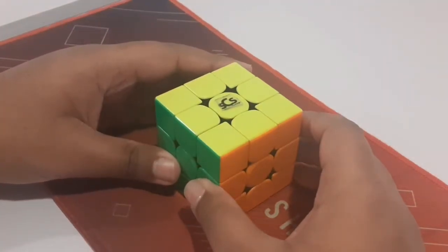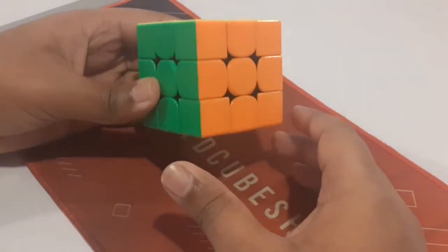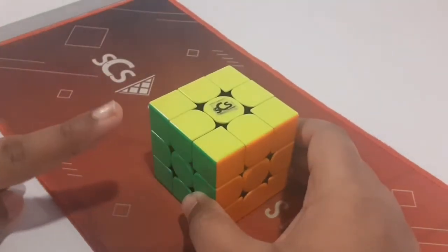Hey guys, this is the breakdown of my new PB of 9.048 on 3x3, so let's get started. The scramble is on screen.